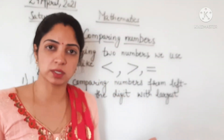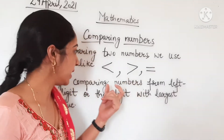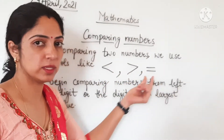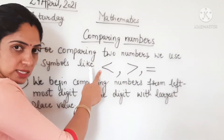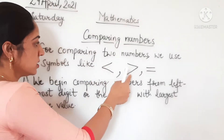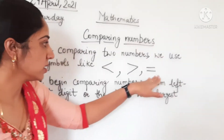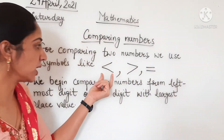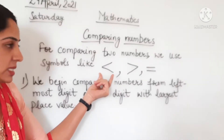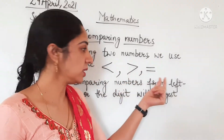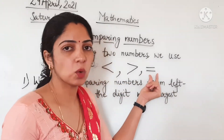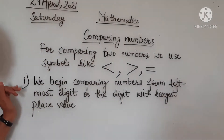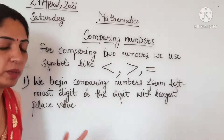We use some symbols for comparing two numbers: less than, greater than, and equal or same.